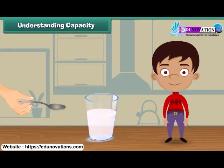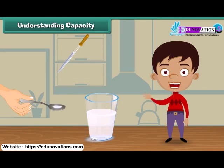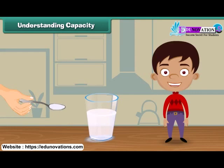This is a spoon. I will now fill this spoon with milk. Let us see how many drops of milk are required to fill the spoon. Here goes the first drop, and this is the second drop of milk in the spoon. The spoon is still empty. Let us put one more drop in the spoon, and now the fourth drop. Now the spoon is full. Hence, four drops of milk are needed to fill the spoon.